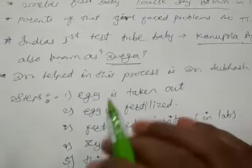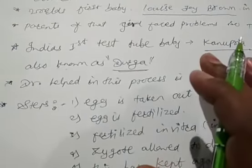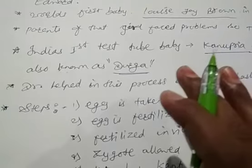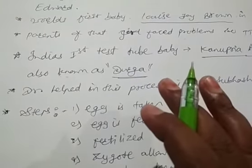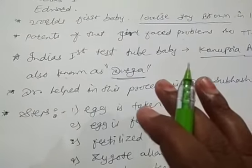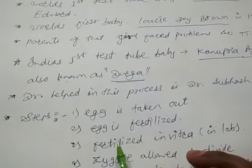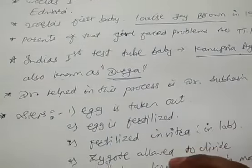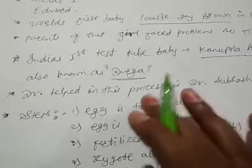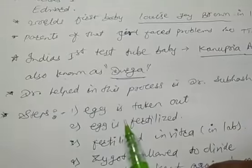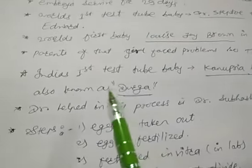This method is called the test tube baby program, or in vitro fertilization, also known as IVF. So in vitro fertilization is why people call it the test tube baby. We will now learn the steps involved.